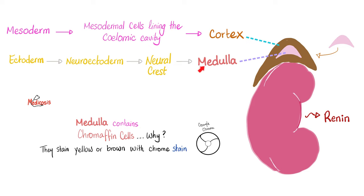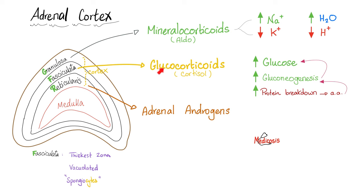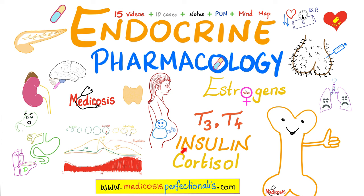The difference between adrenal cortex and adrenal medulla: the adrenal cortex is mesodermal in origin, but the adrenal medulla is ectodermal — it came from the neural crest cells. The adrenal cortex makes mineralocorticoids, glucocorticoids, and adrenal androgens. The adrenal medulla makes catecholamines — epinephrine (adrenaline), norepinephrine (noradrenaline), and dopamine. You can learn about thyroid hormone, types of insulin and insulin doses, cortisol, estrogen, progesterone, and androgens by downloading my endocrine pharmacology course at medicosisperfectionitis.com.